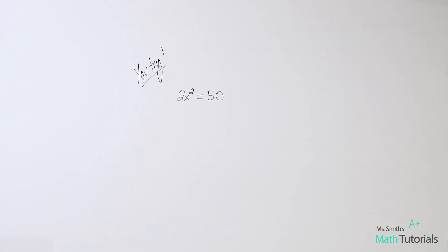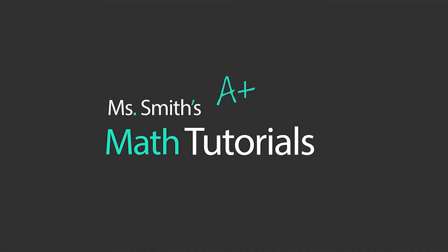Here's one for you to try: 2x squared equals 50. I want you to specifically solve it using the square root method. Remember, get your x squared alone, then take the square root of both sides. I will post the answer in the video description below. This has been Ms. Math Tutorials.